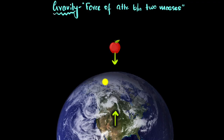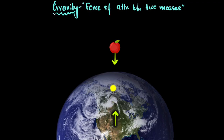Now remember, the Earth is not the only one pulling on the apple — the apple also pulls back on the Earth. Newton's third law: it puts an equal and opposite force back on Earth. So this is the force of gravity. But there's nothing special about Earth and the apple — any two masses will attract each other.